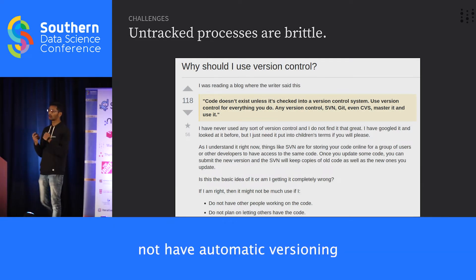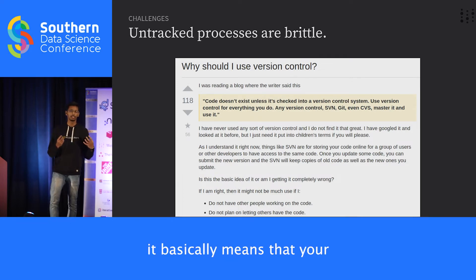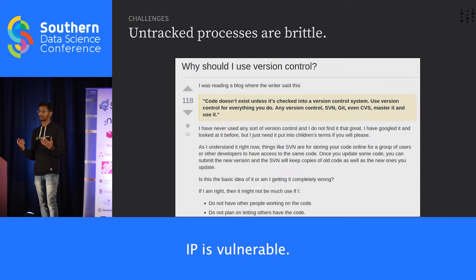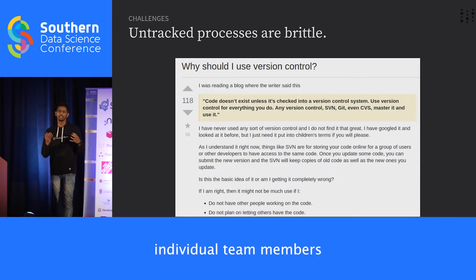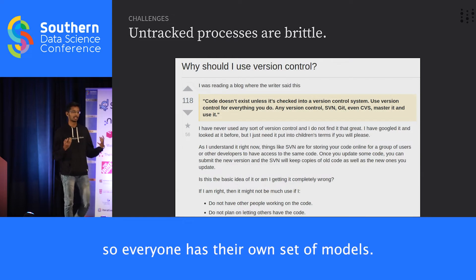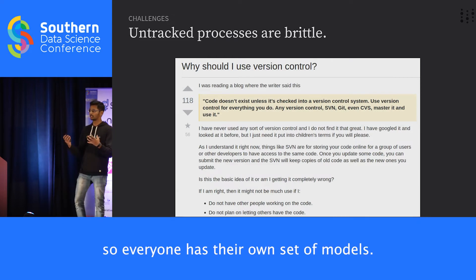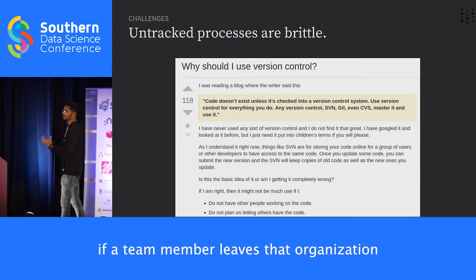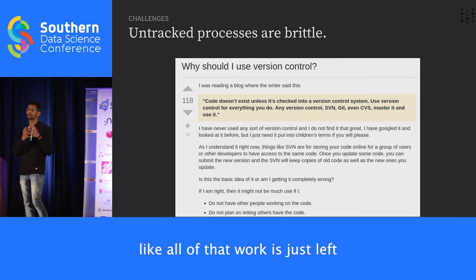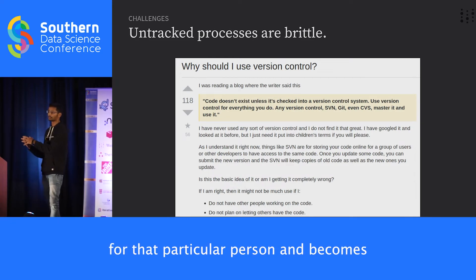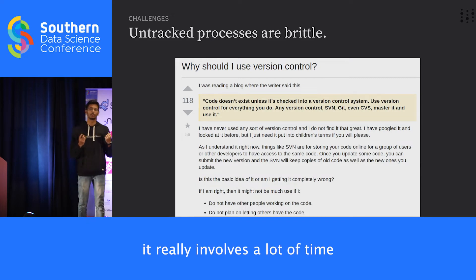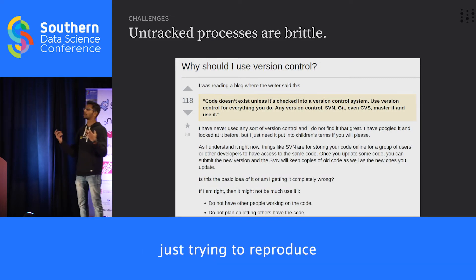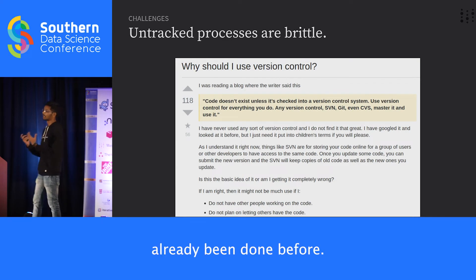At the same time, if you do not have automatic versioning on your dataset, it basically means your IP is vulnerable. A lot of times, most individual team members are working in silos — everyone has their own set of models. If a team member leaves the organization, all of that work is just left with that particular person, and it involves a lot of time and effort just trying to reproduce something that's already been done before.